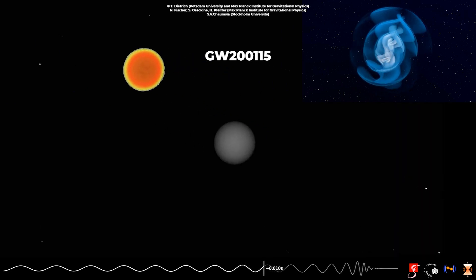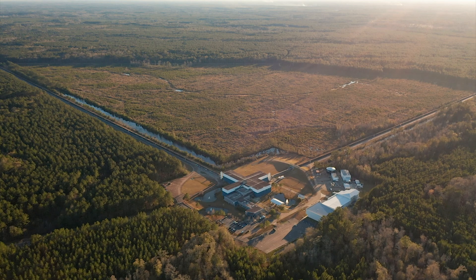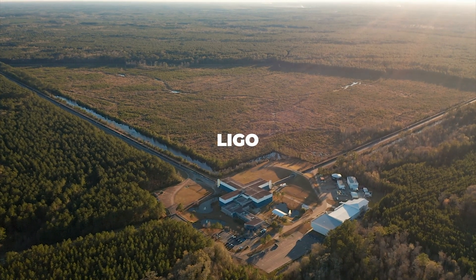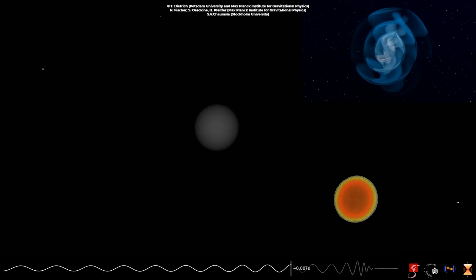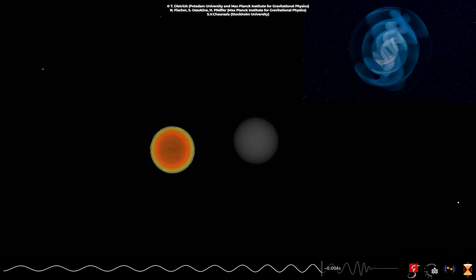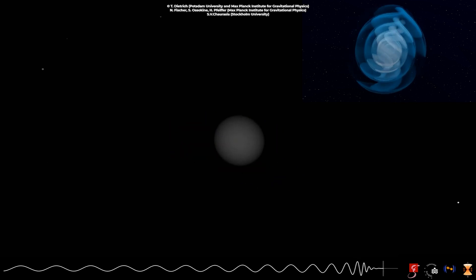The second collision, dubbed GW200115, detected by both LIGO and Virgo, an Italian interferometer, was discovered just ten days later. It involved a black hole six times the mass of the sun and a neutron star twice as massive as the sun.